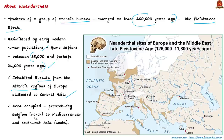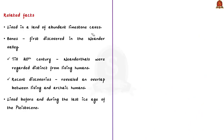Similar archaic human populations also lived at the same time in Eastern Asia and Africa. Neanderthals lived in a land of abundant limestone caves, which preserved their bones. The bones of one Neanderthal were first discovered in the Neander Valley in Germany, from which the name Neanderthal derives. Until the late 20th century, Neanderthals were regarded as genetically, morphologically and behaviorally distinct from living humans. But more recent discoveries have revealed an overlap between living humans and these archaic humans. Neanderthals also lived before and during the last ice age of the Pleistocene epoch.